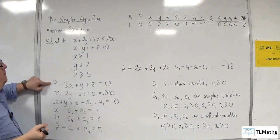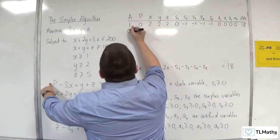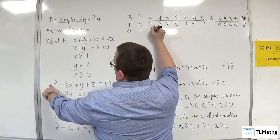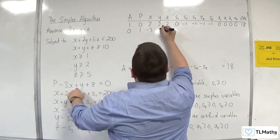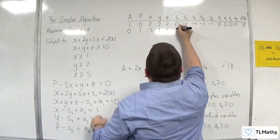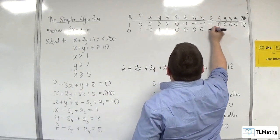Then we've got the p-row: 0, 1, minus 3, 1, 1, and the rest are zeros.